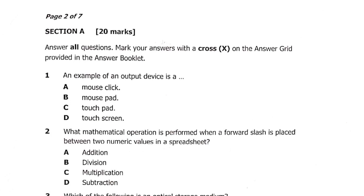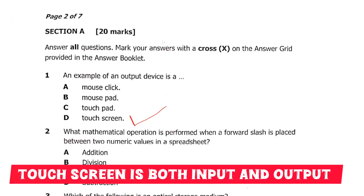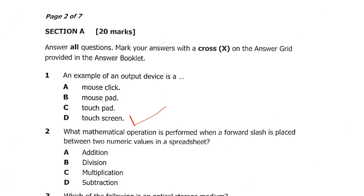The first question is: an example of an output device is — A: a mouse click, B: a mouse pad, C: touchpad, D: touch screen. Which one is an example of an output device? The correct answer is D — a touch screen is an example of an output device.